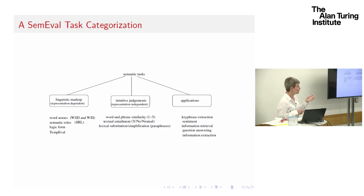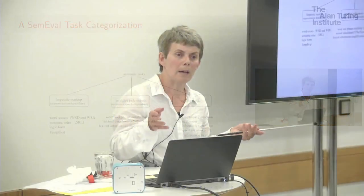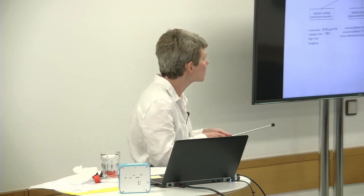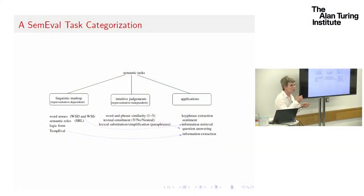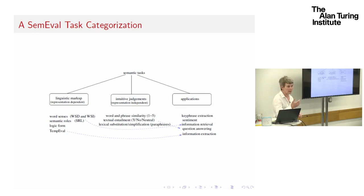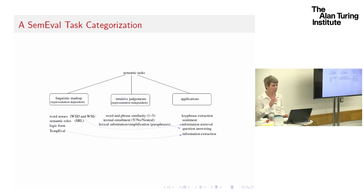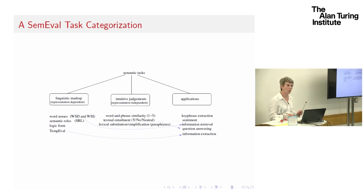There's also applications — there's been great interest in having systems demonstrate they're useful in applications, and some application tasks are run in SemEval, though these tend to be in bite-sized chunks, like ranking a set of answers to a question rather than a full-blown question-answering system. I'm going to mainly talk about a few tasks in the linguistic-markup versus intuitive-judgment camps, to show the pros and cons. I really do feel there are pros and cons of both approaches.